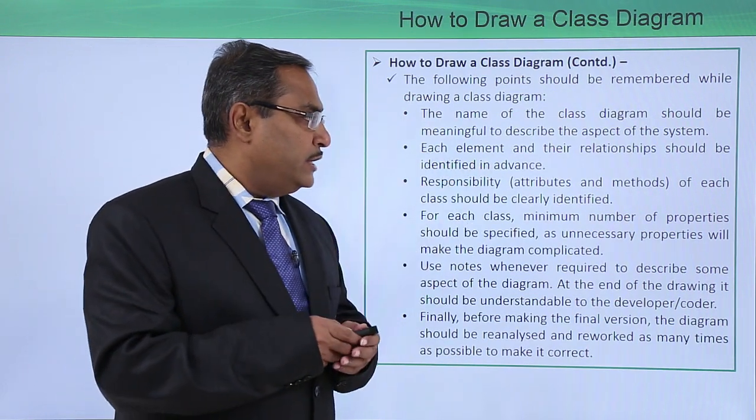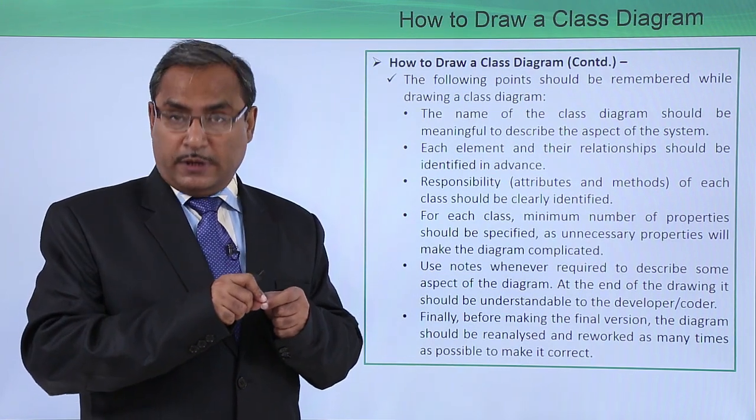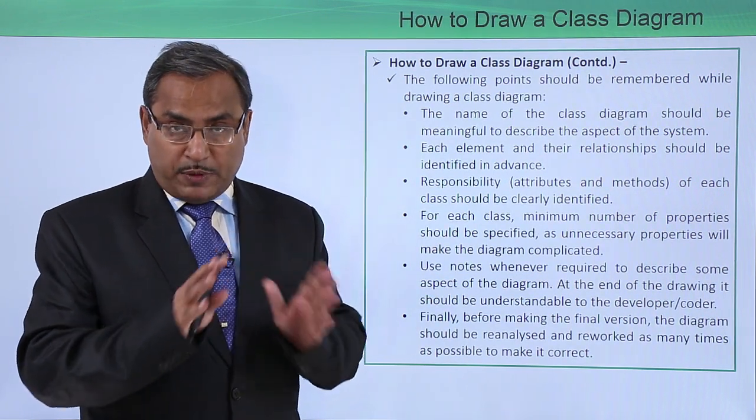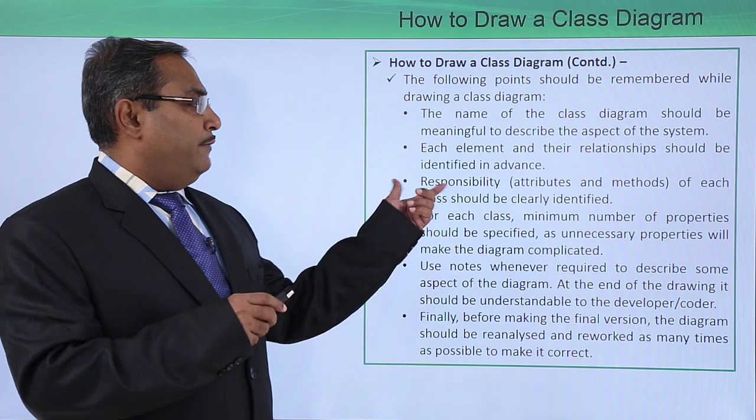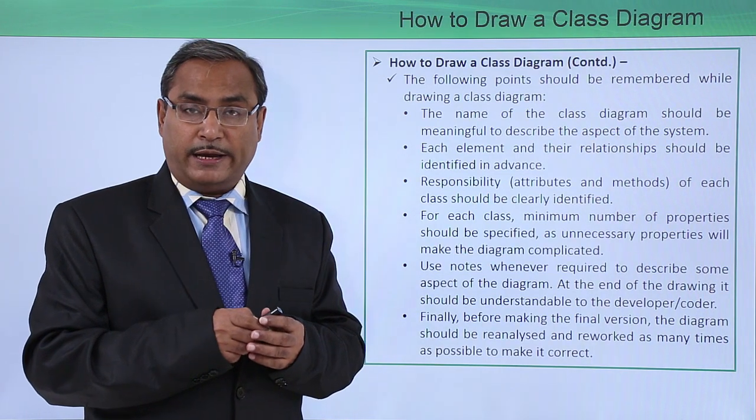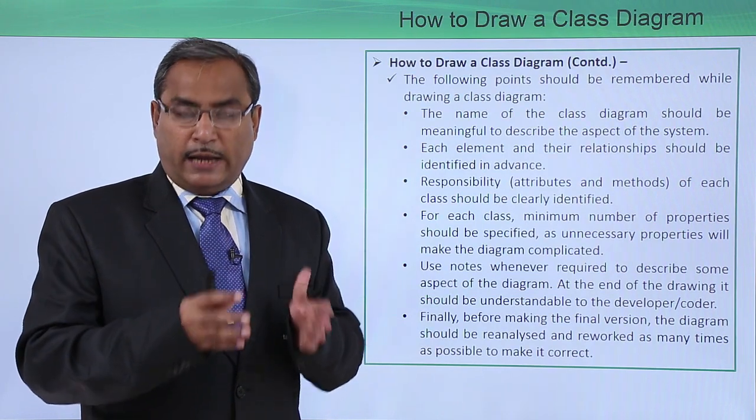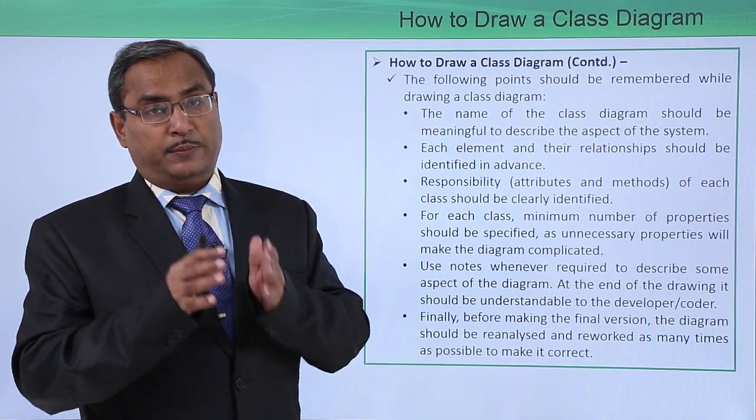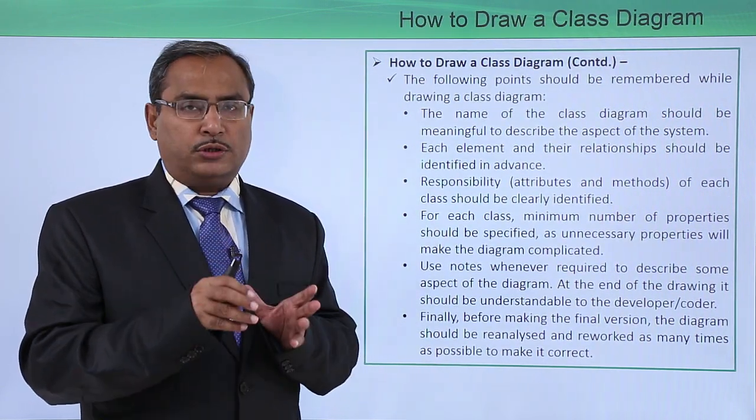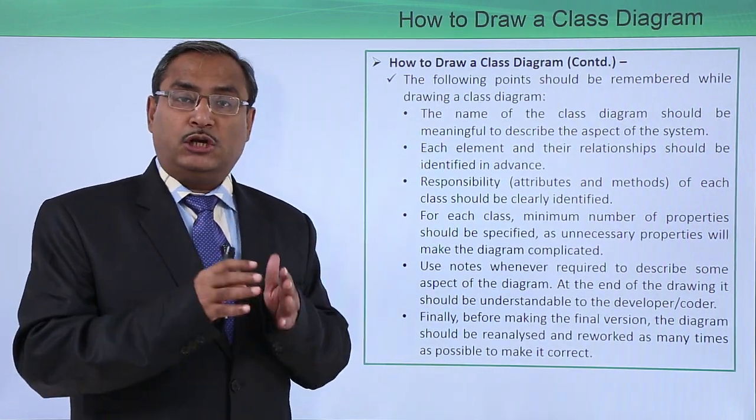Each element and their relationship should be defined in advance. So that means each and every element and what are the respective relationships between them are to be described in advance in a very descriptive way. And responsibility, that is attributes and the methods of each class, should be clearly identified. So here we are having the list of attributes which will be holding the values. And while defining those attributes, their respective constraints, their data types, we must be mentioning that one explicitly. And these methods, whether they will be coming under the private scope or public scope, they are to be mentioned properly.